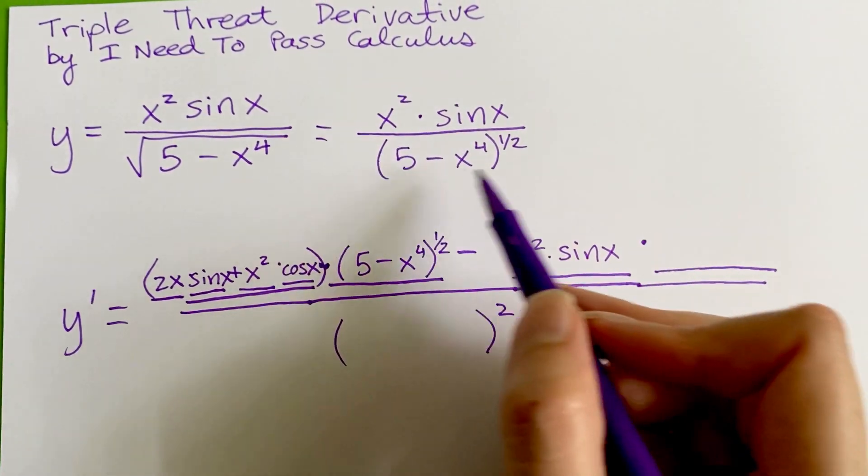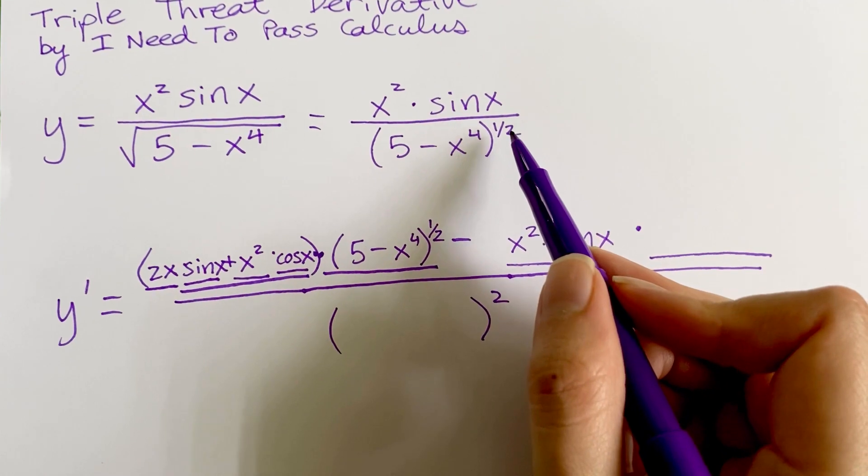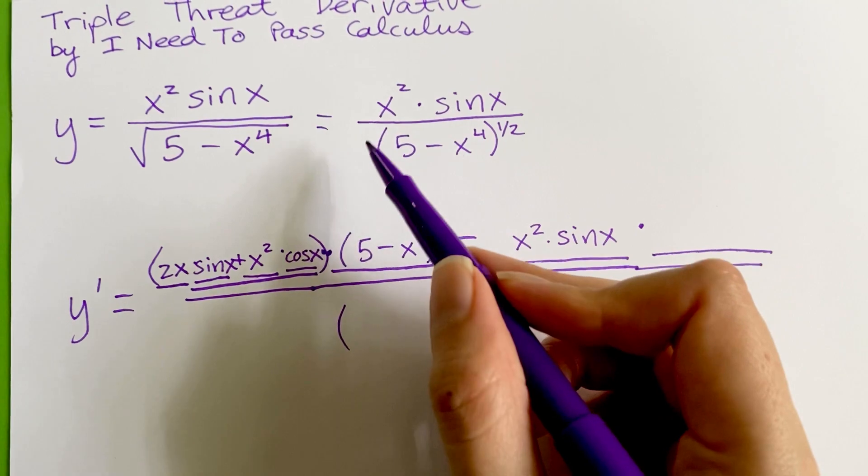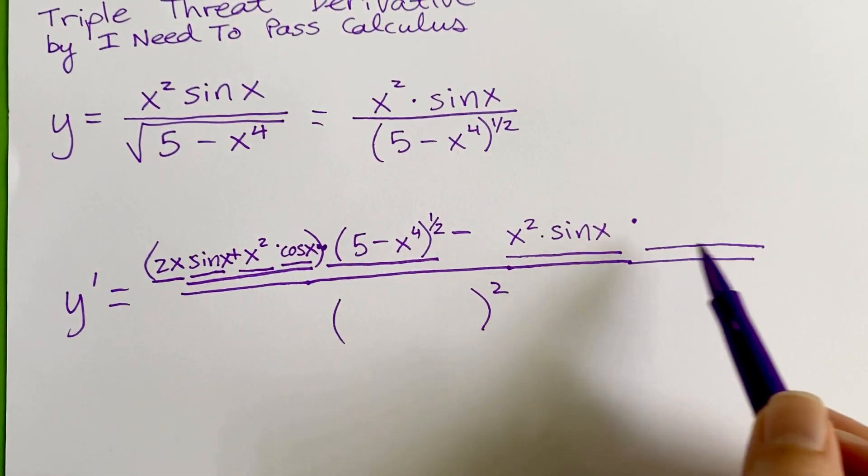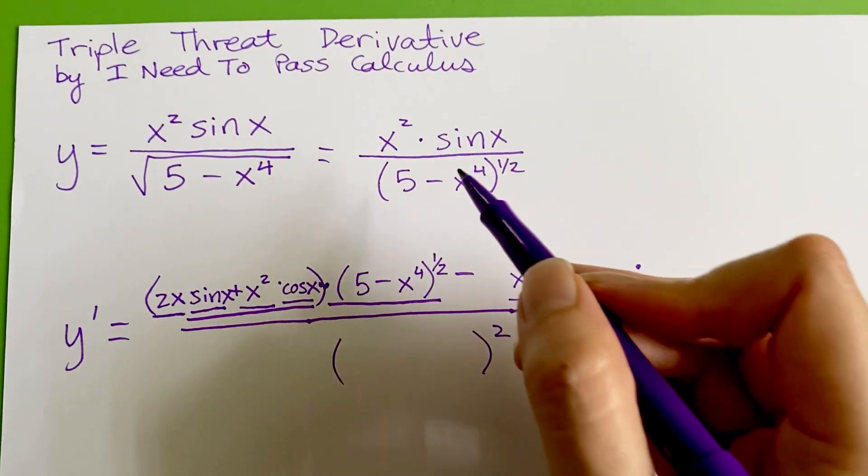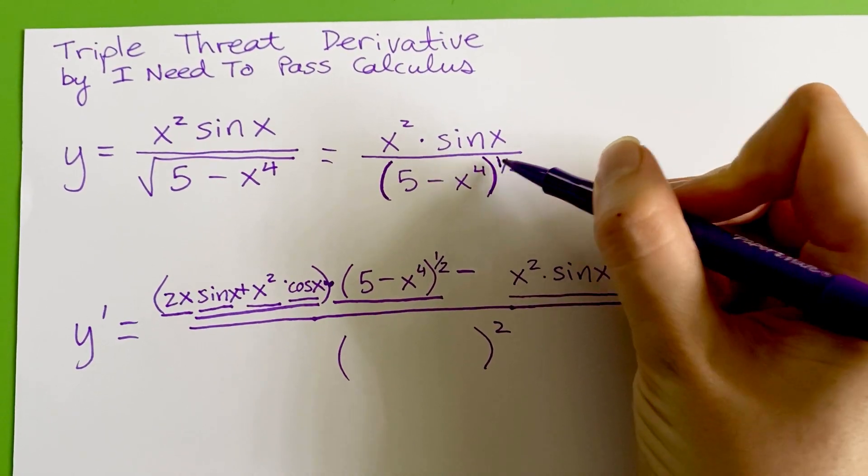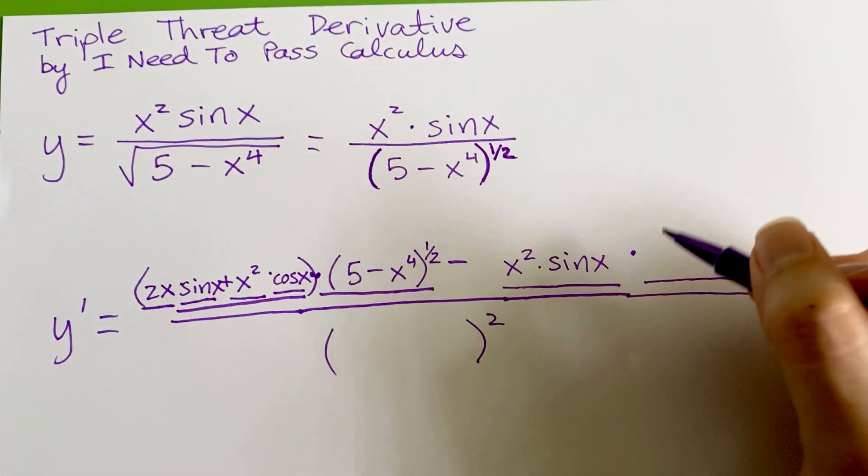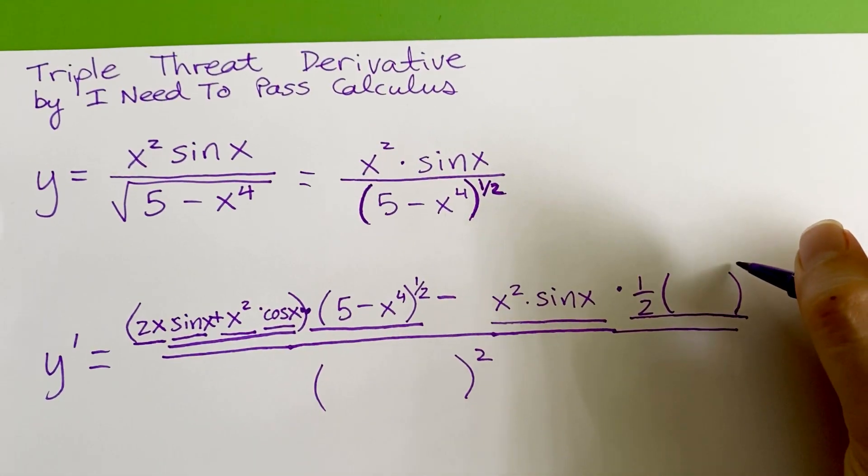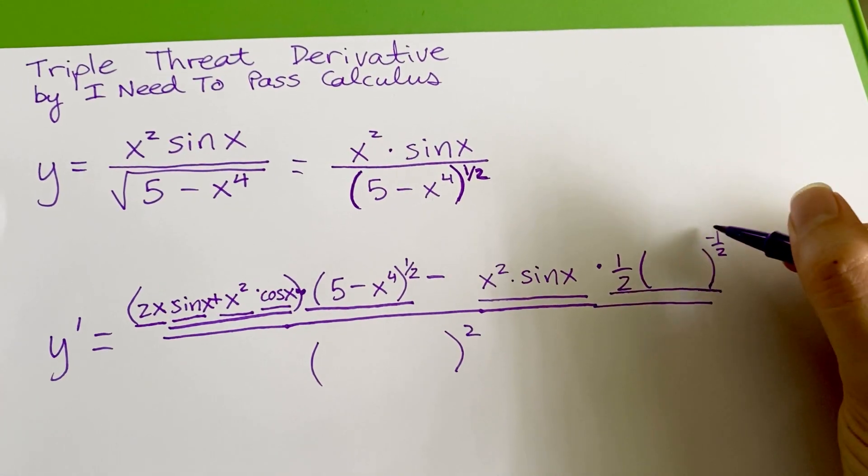This is a nested function. Your outer function is something to the one-half power, and your inner function is five minus x to the fourth. So this is going to be a chain rule downstairs. This little guy will be a chain rule. So we need to take the derivative of the outer function. The outer function is blank to the one-half. So to take that derivative, it's going to be a power rule. We bring the one-half down out front, and we subtract one from the exponent. So one-half minus one is negative one-half.